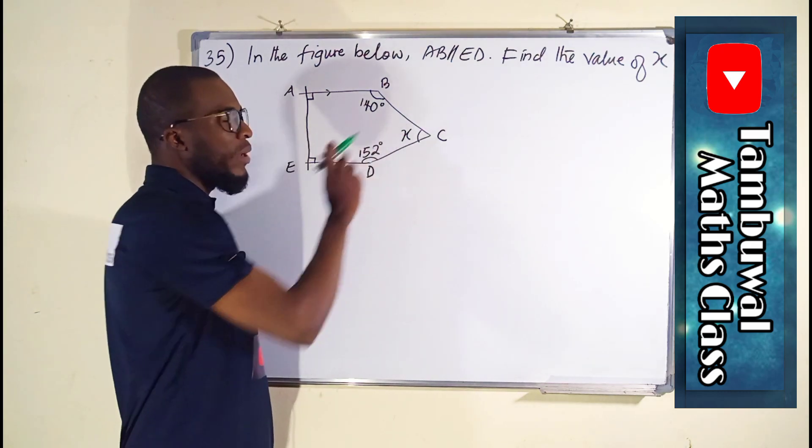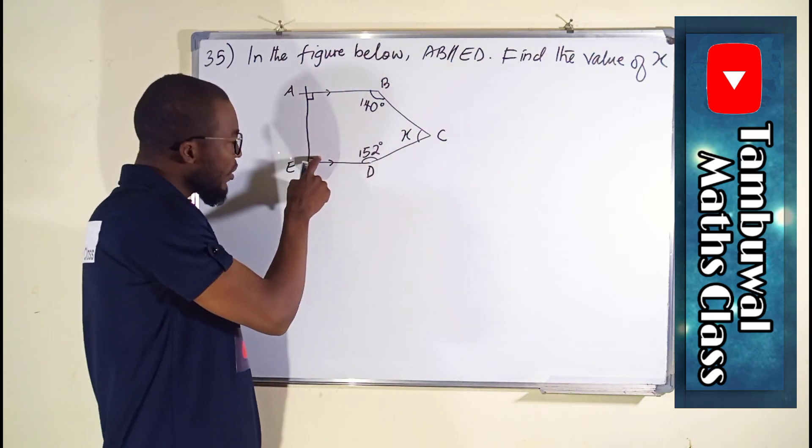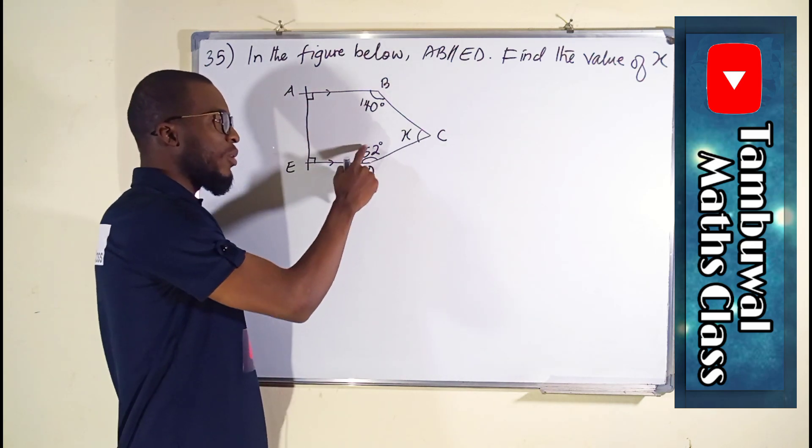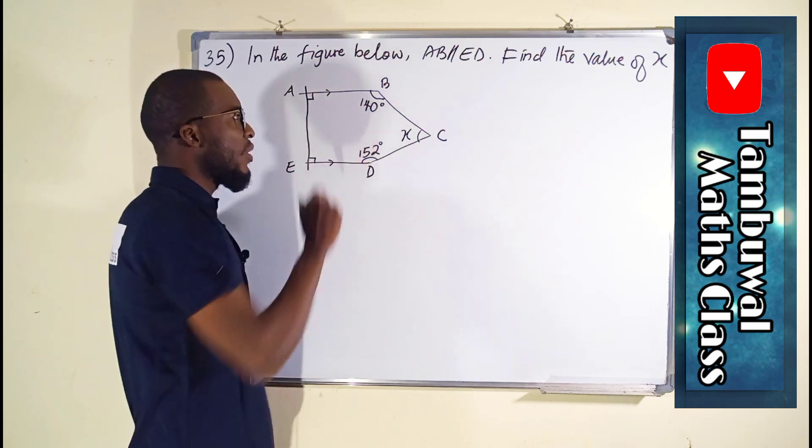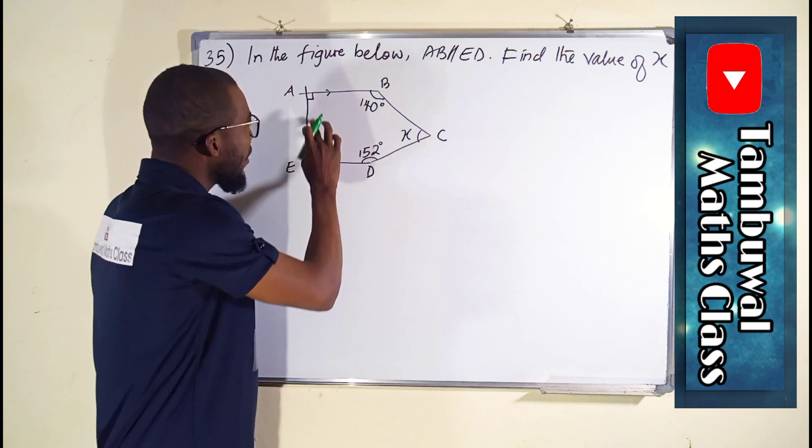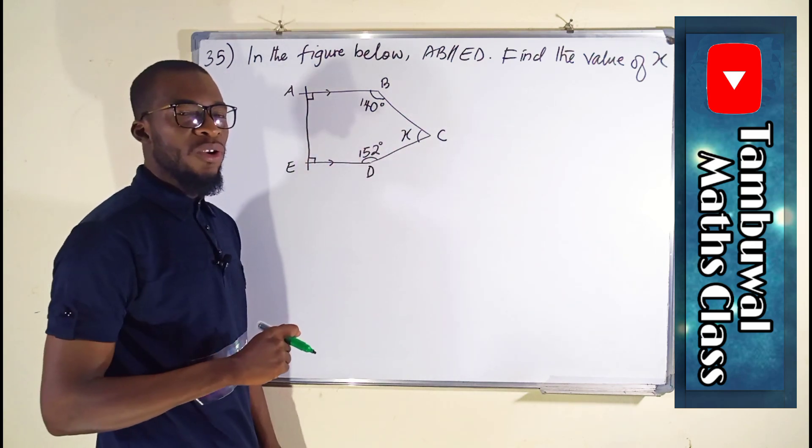Since we are looking for angle X here, we know this angle is 90 degrees, this angle is 90 degrees, we are given that this angle is 152 and this is 140. If we add all these five angles together, we are going to obtain 540.